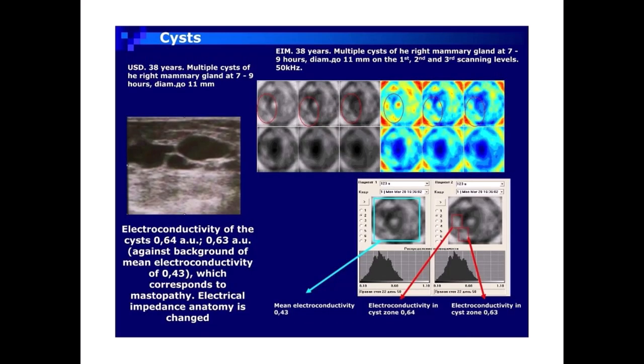Cysts EIM case: 38 years. Multiple cysts of the right mammary gland at 7–9 hours, Di-AM 11 mm, shown on the first, second, and third scanning levels at 50 kHz. Ultrasound: 38 years, multiple cysts of the right mammary gland at 7–9 hours, Di-AM 11 mm. Electroconductivity of the cysts: 0.64 AU and 0.63 AU, against a background of mean electroconductivity of 0.43, which corresponds to mastopathy. Electrical impedance anatomy is changed. Mean electroconductivity 0.43; electroconductivity in cysts: 0.64 and 0.63.